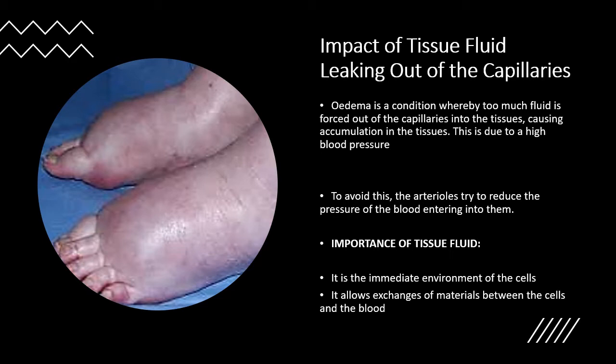Tissue fluid is very important because it is the immediate environment of our cells and it allows exchange of materials. Tissue fluid can carry things like glucose. I often tell students that tissue fluid is essentially plasma — plasma without the red blood cells or white blood cells — but other materials can be carried inside it, making it a good site for exchange between cells and the blood.